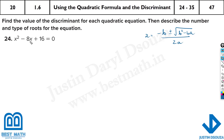From the quadratic formula, we can find the discriminant and then tell what type of roots and how many roots there will be for this equation. That is only this part — b squared minus 4ac — from the quadratic formula.